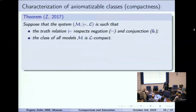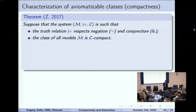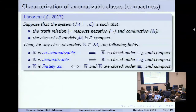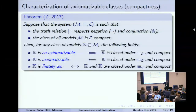An easy observation: if the truth relation respects negation, then we don't need two relations — subsumption and equivalence — they coincide. Now I can formulate the first general definability theorem using compactness. If the truth relation respects negation and conjunction, and the class of all models is compact, then a class is axiomatizable if and only if it is closed under elementary equivalence and compact. So compactness distinguishes axiomatizable classes from the upper species in our hierarchy.